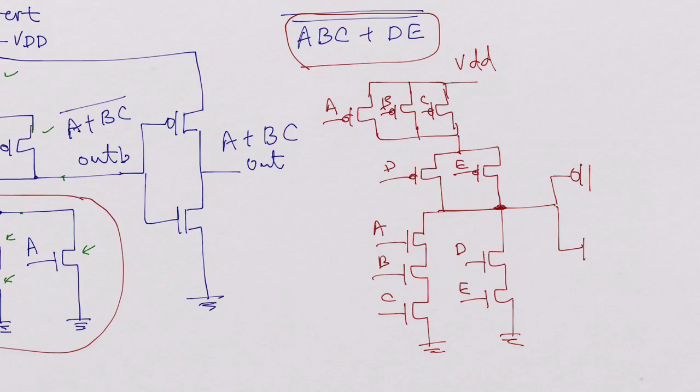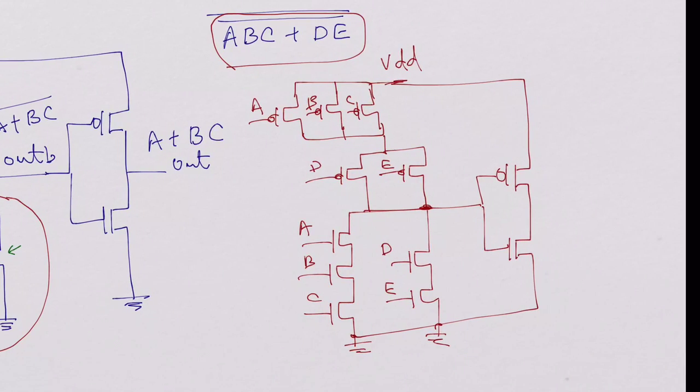And then you take this output and you invert it again. So you can realize this function. This is pretty useful. And actually in digital libraries you see complex gates like this. They are usually built this way.